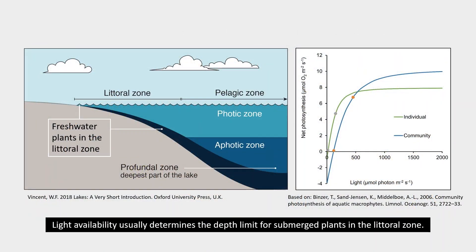Light availability usually determines the depth limit for submerged plants in the littoral zone. Plants acclimate to light availability by altering their physiology, leaf anatomy, and shoot morphology.